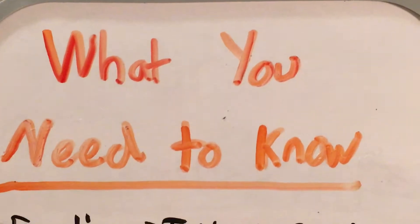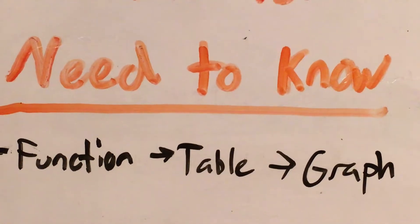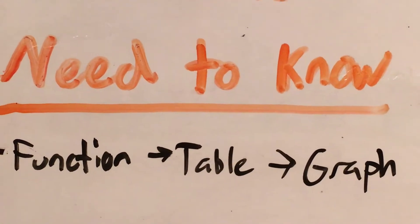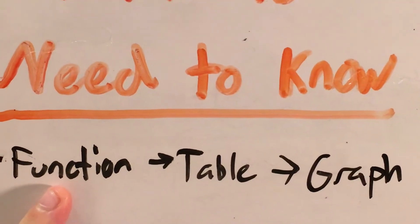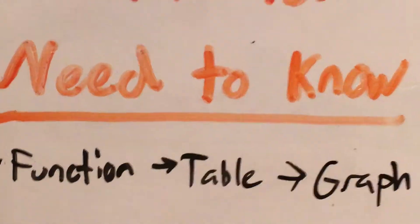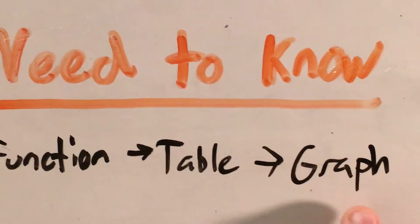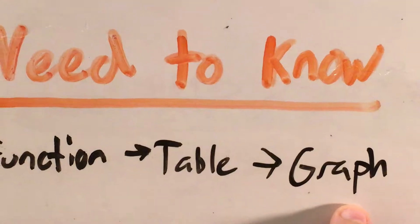Now, I use linear equation and function interchangeably for the most part. I know it's not always correct, but I find it easier to just stick with one word most of the time. So we're going to have to go from that function language of y equals negative x to using a table to find some points that we can plot to actually looking for those points on a graph.